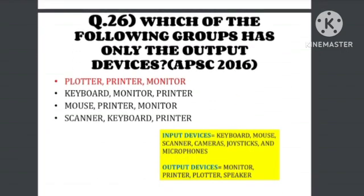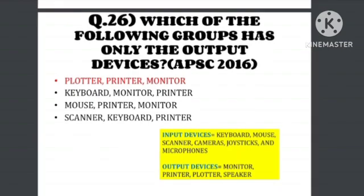Question number 26: Which of the following group has only output devices? The options include plotter, printer, and monitor. These are all output devices. The answer is the group containing plotter, printer, and monitor — all of these are output devices.